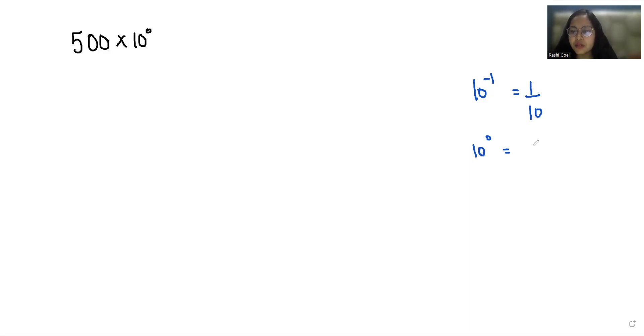So a^0 is always 1. Whether it's 2^0 = 1, 3^0 = 1, 4^0 = 1, 1000^0 = 1, or 999^0 = 1 - any number to the power of 0 equals 1.